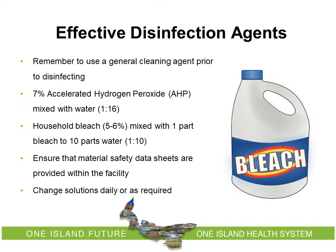Effective cleaning agents: Disinfectants effective against norovirus and most other microbes include 7% accelerated hydrogen peroxide mixed with water, and household bleach mixed at 1 part bleach to 10 parts water. Be aware that household bleach may cause respiratory irritation for some people. Proper use of personal protective equipment may decrease the risk of reactions to chemicals. Your facility should provide material safety data sheets for any chemicals used. During an outbreak, a facility must increase cleaning frequency to prevent the spread of infection.